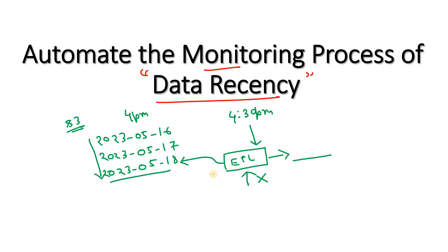Instead of that, if we can implement a system where at 4 PM one code will run and check whether data arrived in the latest partition or not — and if the data is not available, the code itself will send an automatic mail to the source team — that is the goal. As per earlier discussion, ideally data should be available by 4 PM; our job starts at 4:30 PM, so if data is not available our job will fail. This automated mail concept is what we call data recency — indicating whether data was added at the expected time or not. Sometimes the business might want a dashboard showing how many days data came on time across a month.